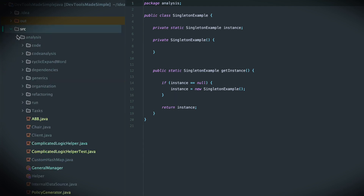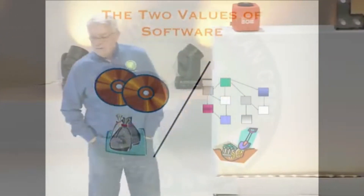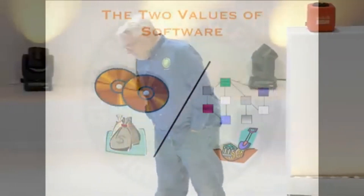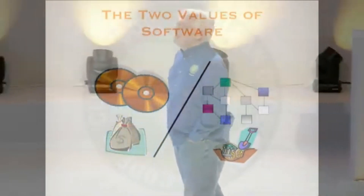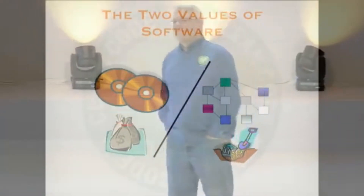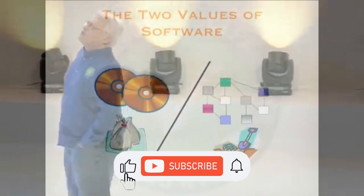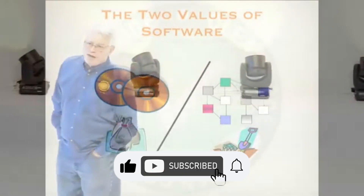And why is that a value? It's a value because of what software is. Software is a compound word — it means flexible product. The very nature of software is that it must be changed; it must be changeable. If it is not changeable, the software has no value.